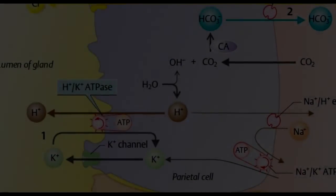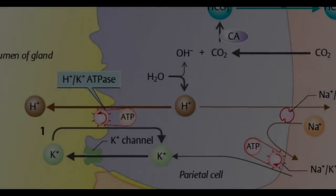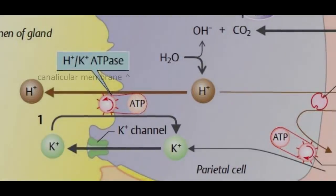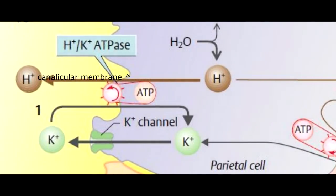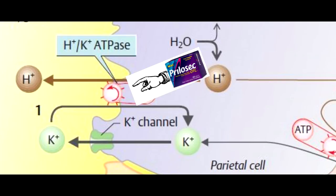Acid secretion is absolutely dependent on the function of hydrogen-potassium ATPase, or the proton pump located in the canalicular membrane of the parietal cell. Drugs developed to non-competitively bind and inactivate the ATPase result in a strong inhibition of acid secretion. Omeprazole is one such acid-activated drug that binds to the two cysteines at the ATPase, resulting in its irreversible inactivation.